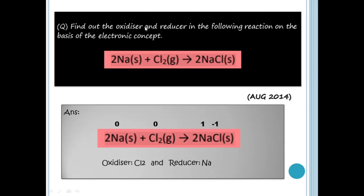From August 2014: find out the oxidizer and reducer in the following reaction on the basis of the electronic concept. The reaction is 2Na + Cl2 giving 2NaCl. The oxidation number method is used here.